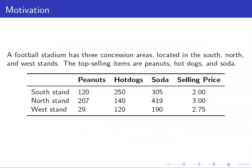Before we discuss the definition of matrix multiplication, let us consider this problem. Suppose a football stadium has three concession areas located in the south, north, and west stands. The top selling items are peanuts, hot dogs, and soda. For example, there were 120 peanuts sold at the south stand, and 120 hot dogs sold at the west stand. This selling price refers to the price of peanuts, hot dogs, and soda.